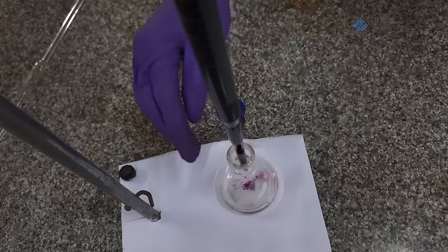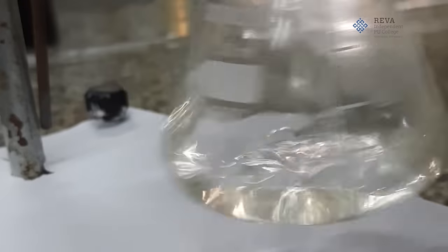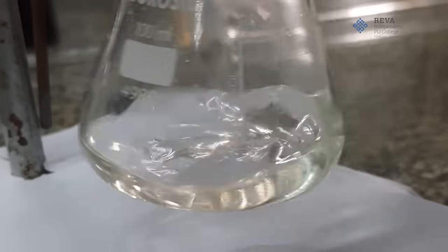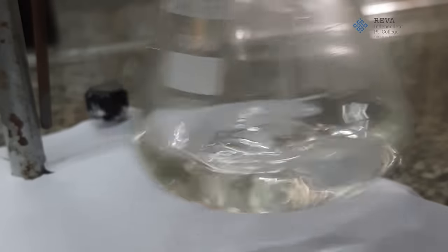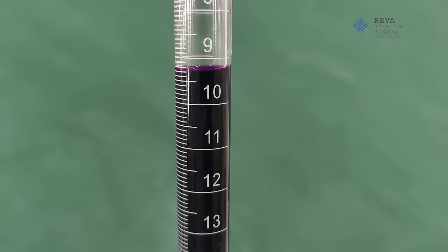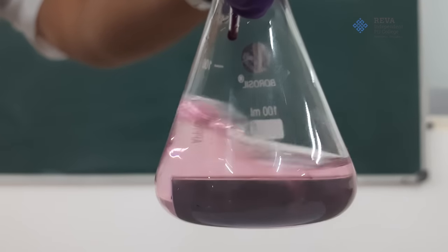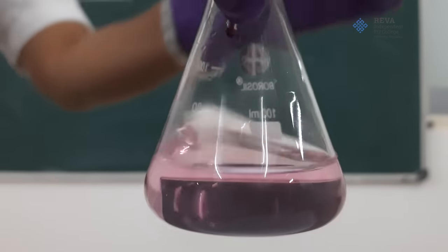We can observe the pink color in the conical flask vanishing fast. That means ferrous ammonium sulfate is reacting with potassium permanganate. Continue adding potassium permanganate solution till we get a permanent pale pink color as it is reaching an end point.